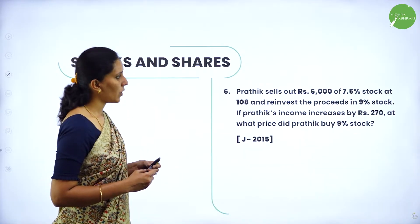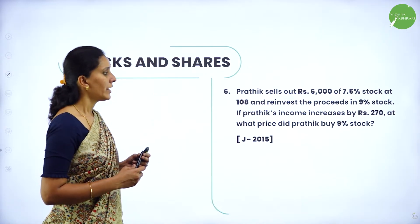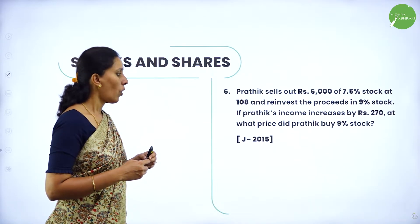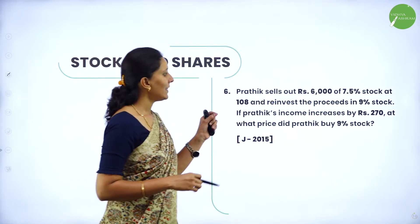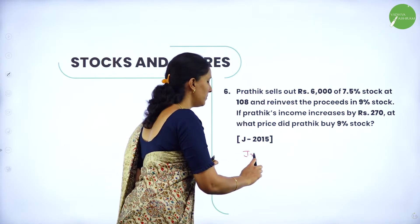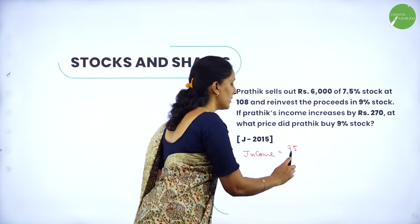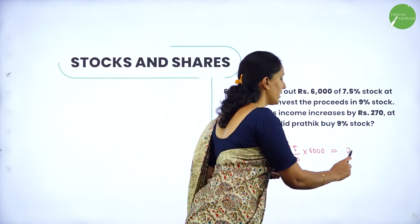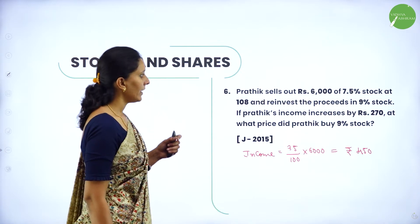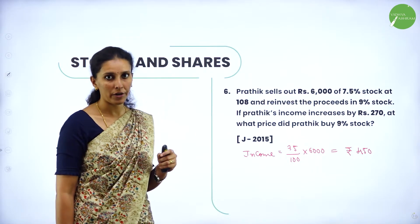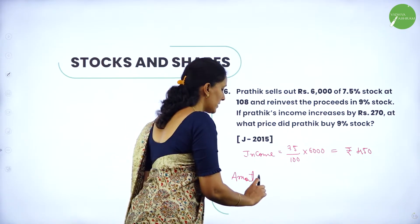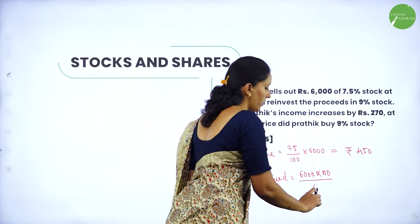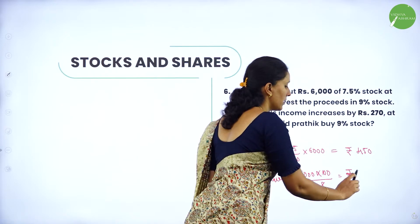Next question: Pratik sells Rs.6000 of 7.5% stock at 108 and reinvests in 9% stock. If his income increases by Rs.270, at what price did Pratik buy 9% stock? First, income from 7.5% stock at 6000 = Rs.450. Amount received by selling = 6000 × 108 / 100, which equals Rs.6480.